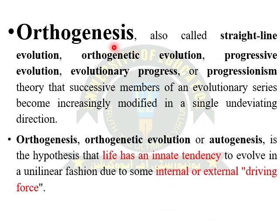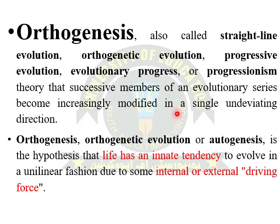Dear students, in this topic of orthogenesis we will discuss that every organism has an innate tendency in their body to evolve according to their internal and external forces. Orthogenesis is also called as straight-line evolution. The different names include orthogenetic evolution, progressive evolution, evolutionary progress, and progressionism.